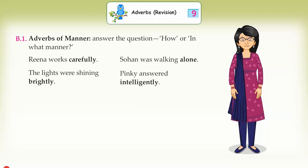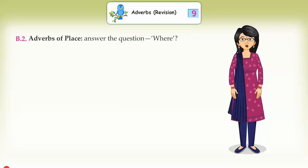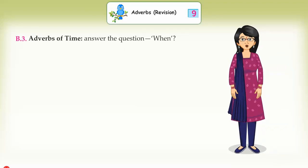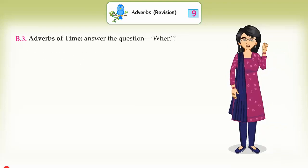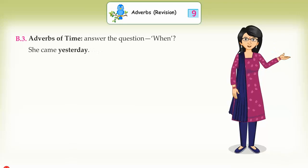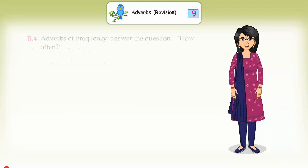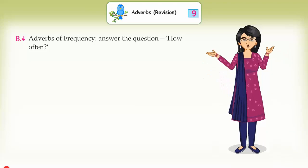Pinky answered intelligently. B2: Adverbs of place answer the question 'where'. Examples: I have looked for him everywhere. Mother is upstairs. B3: Adverbs of time answer the question 'when'. Examples: She came yesterday. They reached the station late.